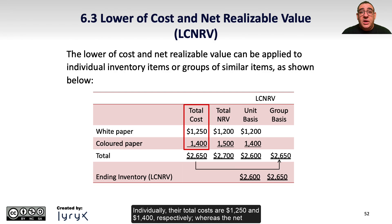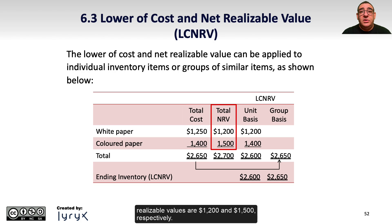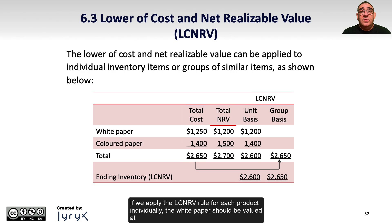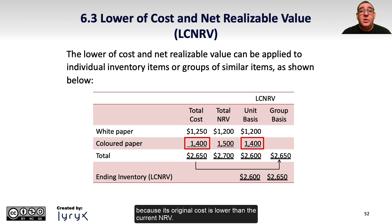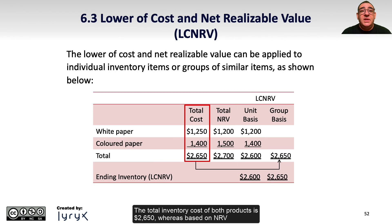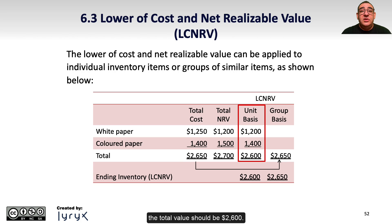Individually, their total costs are $1,250 and $1,400 respectively, whereas the net realizable values are $1,200 and $1,500 respectively. If we apply the LCNRV rule for each product individually, the white paper should be valued at the lesser of the two amounts, which is the NRV of $1,200. The colored paper would be valued at the $1,400 cost because its original cost is lower than the current NRV.